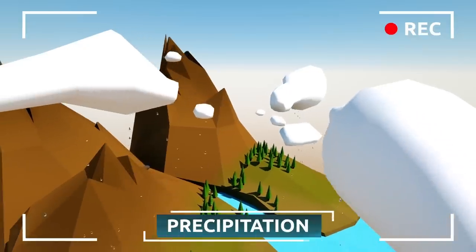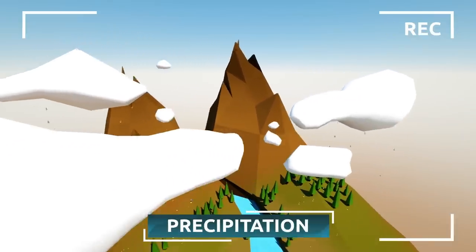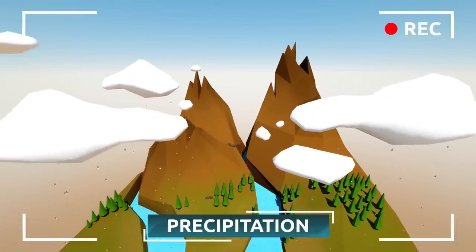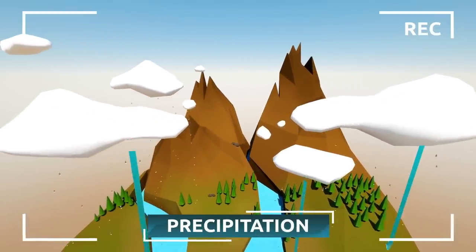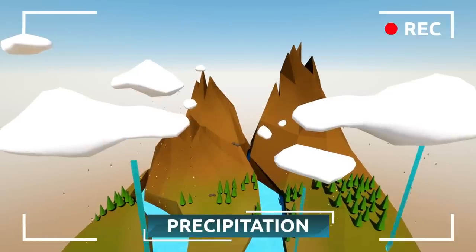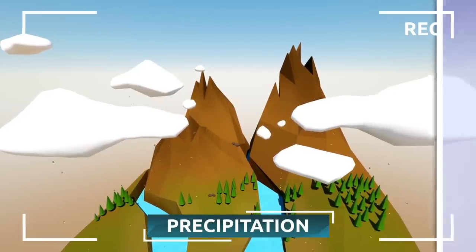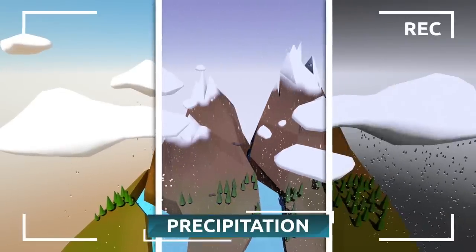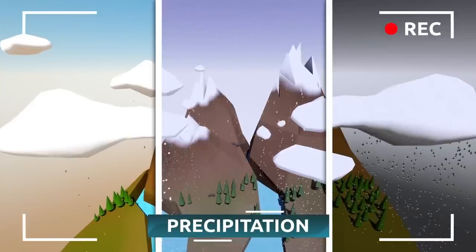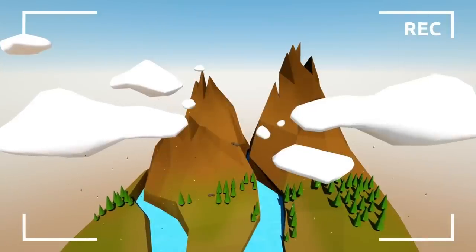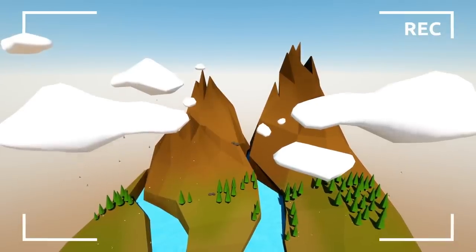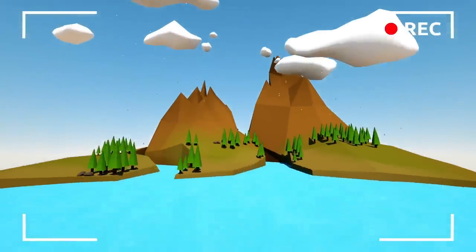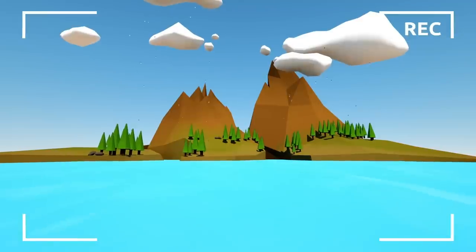Droplets come together, become bigger, and fall to the ground because of gravity — this is how rainfall is produced. If it's even colder, snow or sleet are formed during the same process. We call this precipitation. This is the part I like best — time to fall back to the ground! Here we are again, and the water cycle starts over.